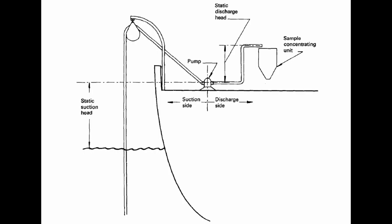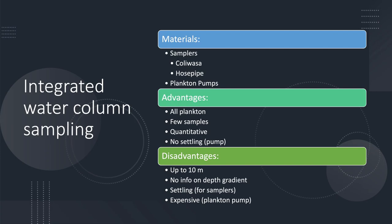The plankton pump is the more expensive method that falls under integrated water column sampling. A pump is lowered to a desired depth, and it brings up water that is then immediately filtered to avoid needing to concentrate the samples. A scale on the pump measures the volume of water being filtered, so once again, it is quantitative. Due to the pump pressure, plankton may be damaged though.